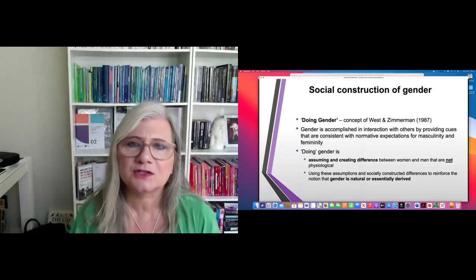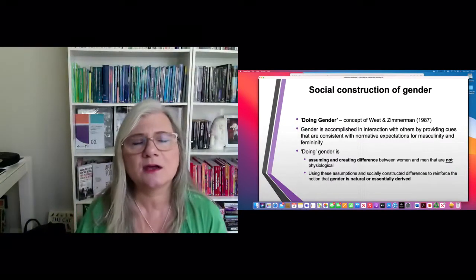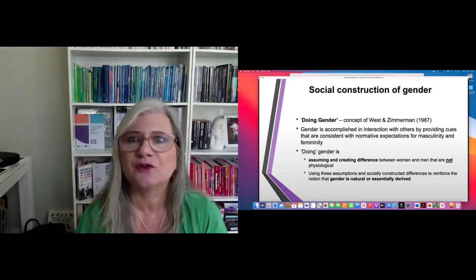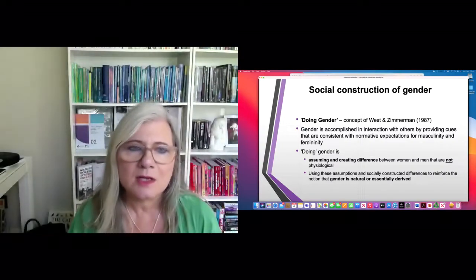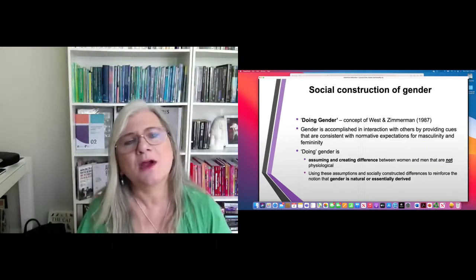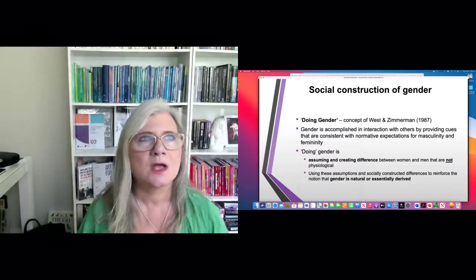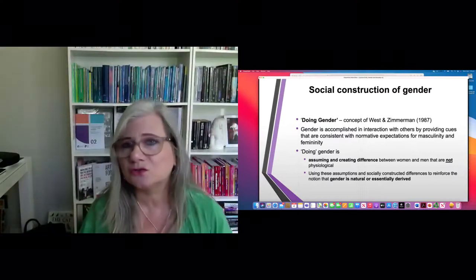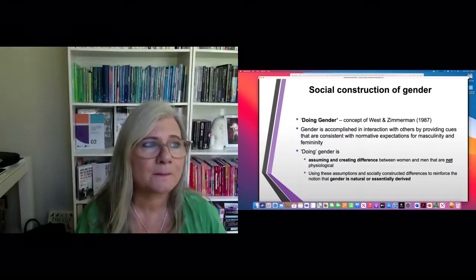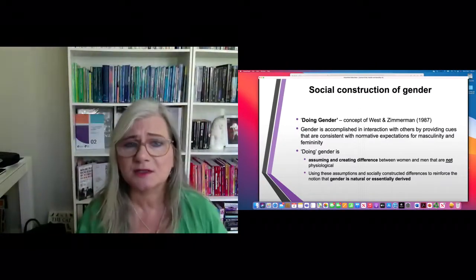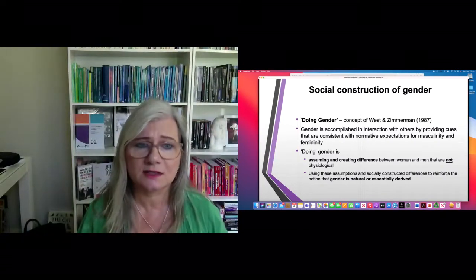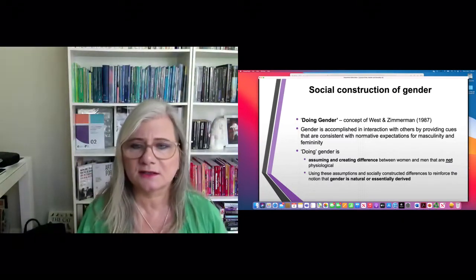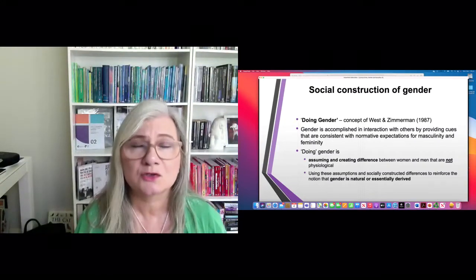The social construction of gender is also about how we perform gender — how we 'do' gender. Gender is active; it's a verb rather than just a noun. It's through our practices — the ways we act, our body language, how we sit, the clothes and jewelry we wear, the exercise or sports we take up, or our leisure activities — that we construct masculinity and femininity around normative lines and normative expectations.